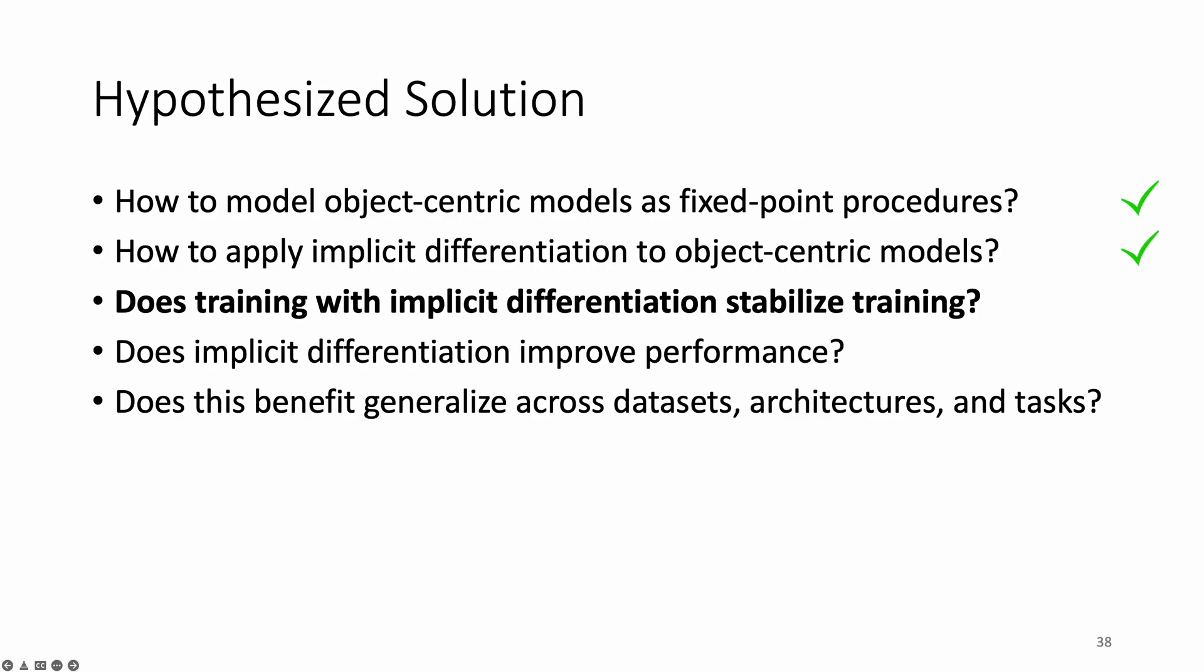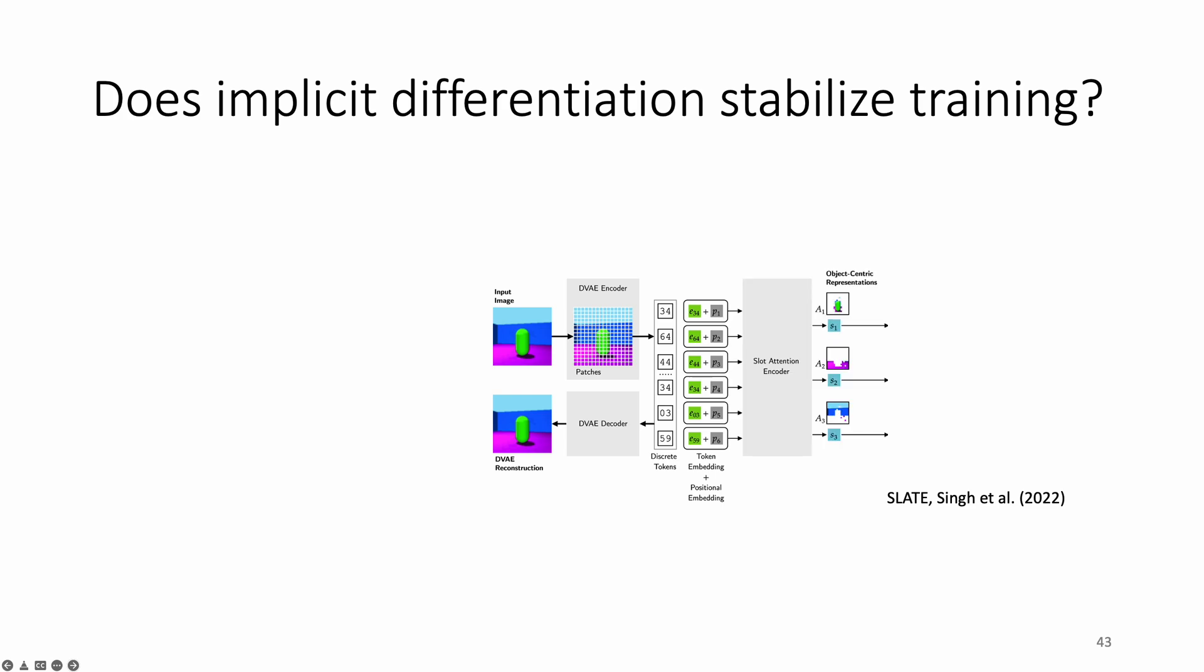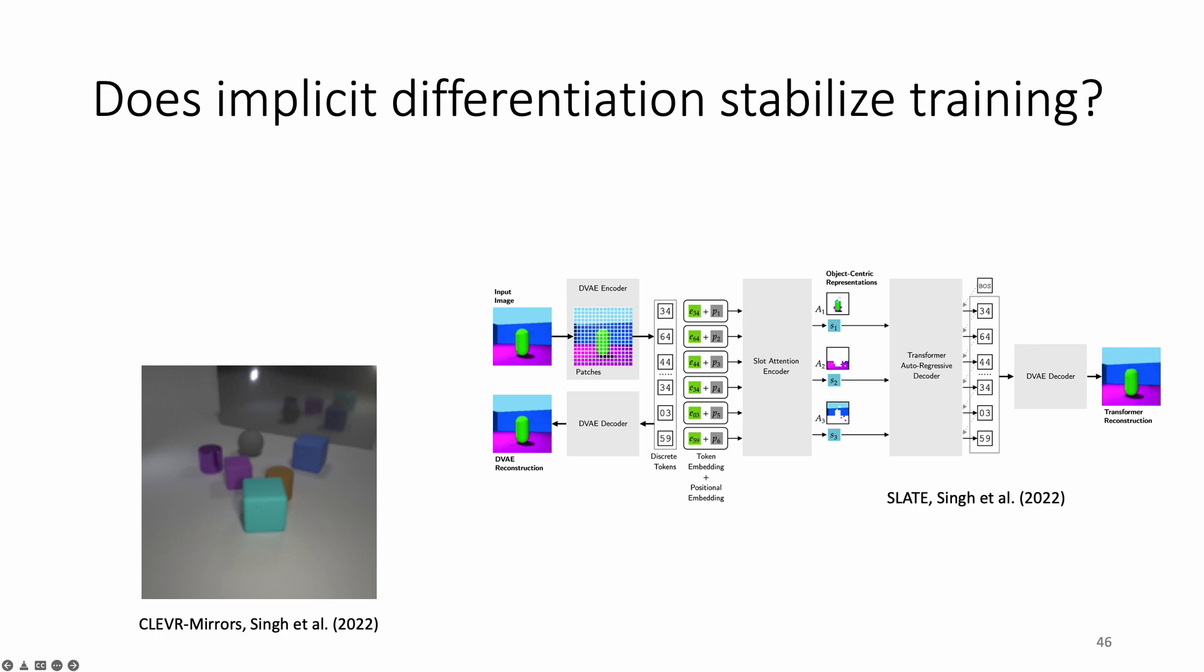That is the approach we will use for the rest of the talk. Now, let's see in what ways our method helps stabilize training. We use the latest method that builds upon slot attention, the Slate Architecture by Singh et al. 2022. The Slate Architecture uses a discrete VAE to tokenize the image. It then uses slot attention to cluster the tokens and a transformer decoder to reconstruct the tokens. These experiments use the dataset created by Singh et al. We will now see how implicit differentiation removes the need for optimization tricks such as learning rate warmup, gradient clipping, and learning rate decay.